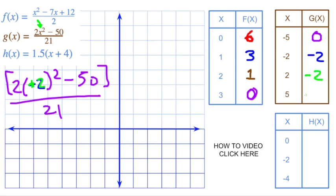When x is 5, we've got 2 times 5 squared. 5 times 5 is 25 times 2 is 50, 50 minus 50 is 0. Yep, divided by 21 is still 0.